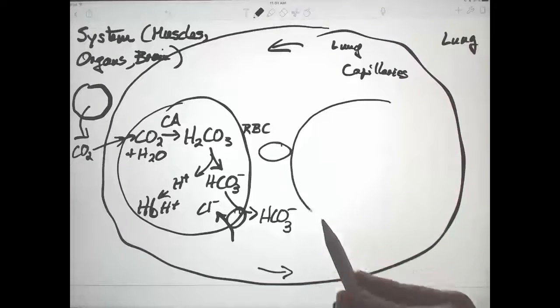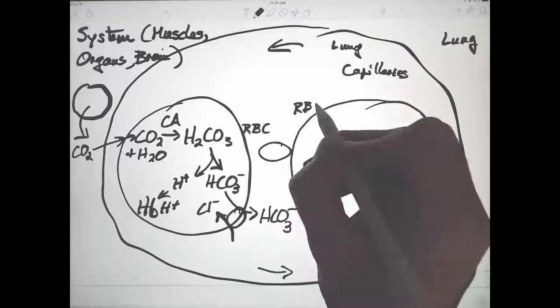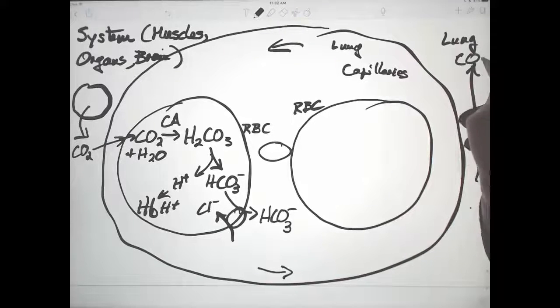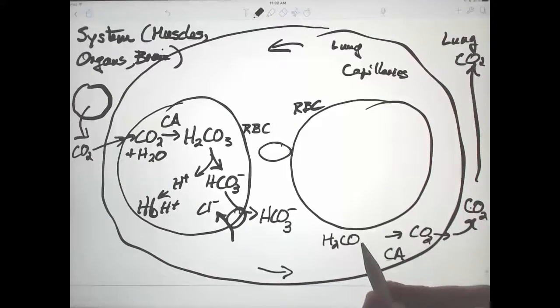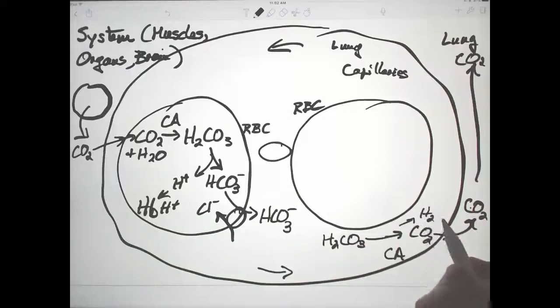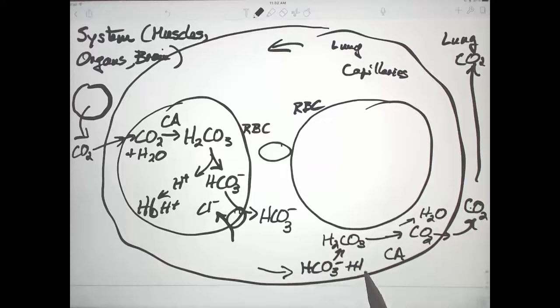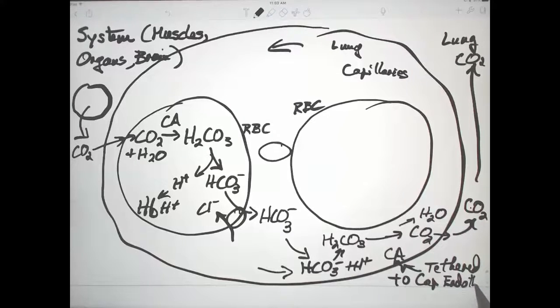When we go to the lungs, this is reversed. So here's our red blood cell again. In the lungs, carbon dioxide is being breathed out. And so carbon dioxide is constantly leaving. Carbon dioxide is leaving here. And therefore, in the presence of carbonic anhydrase, any carbonic acid will dissociate into carbon dioxide and water. And some of the bicarbonate that was present in the blood will wind up being converted back to carbon dioxide by this pathway. A bicarbonate ion plus a proton to carbonic acid in the presence of carbonic anhydrase, which is tethered to the capillary endothelium, which is an epithelial cell layer.